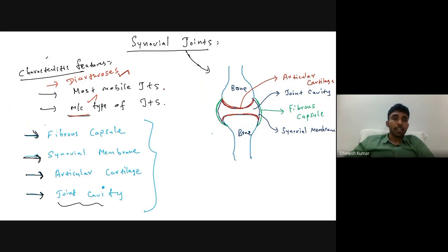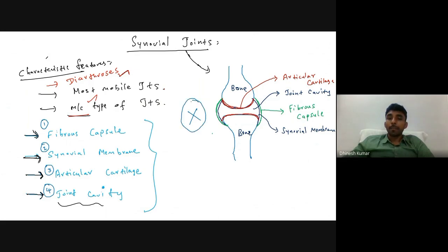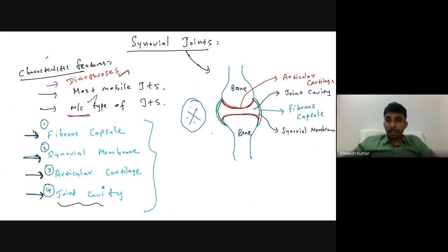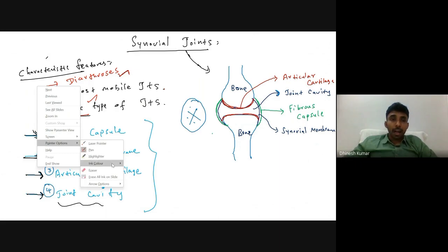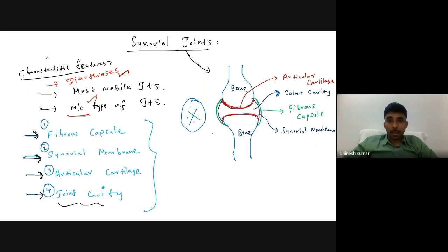The four characteristic features of synovial joints are: they have a fibrous capsule, a synovial membrane, articular cartilage, and a joint cavity. Between the two articulating bones there is a joint cavity, and the articular surfaces of the bones are lined by articular cartilage.